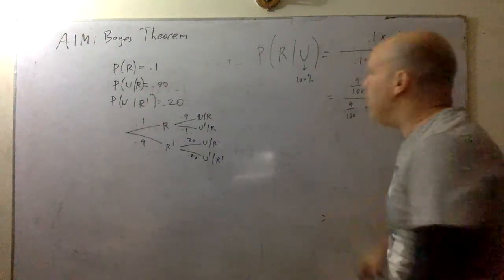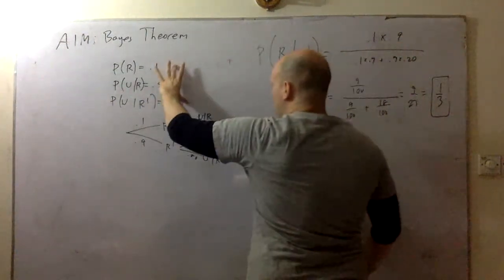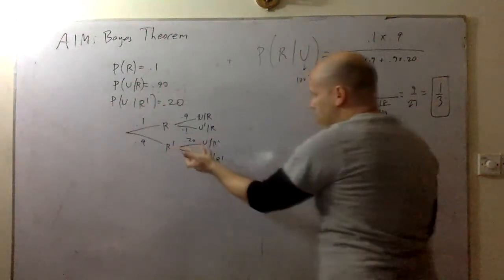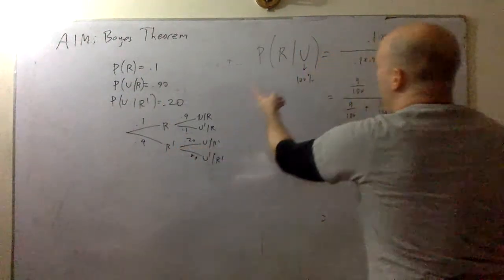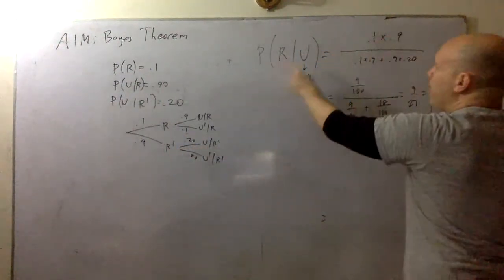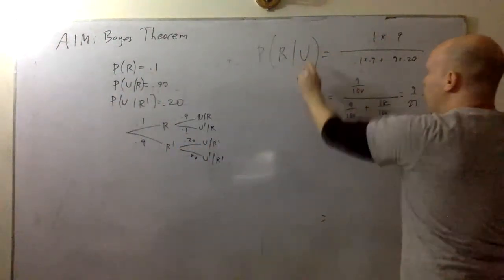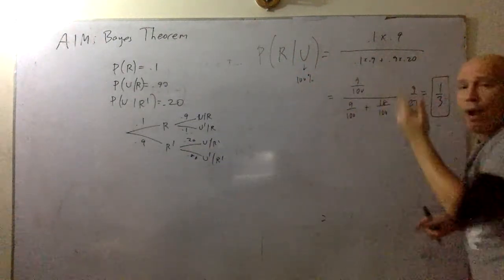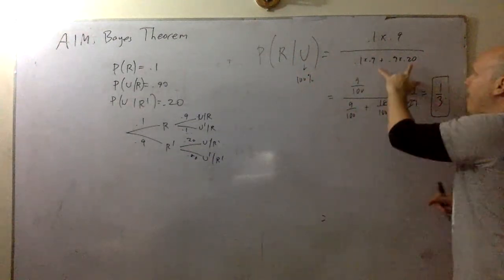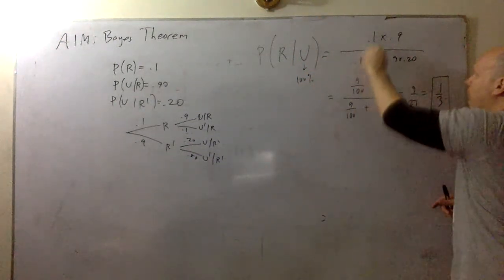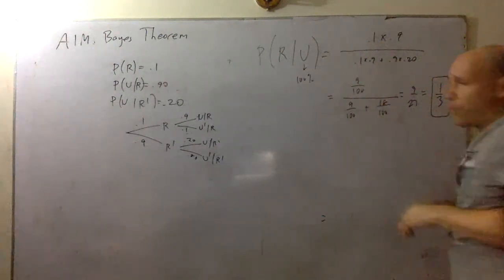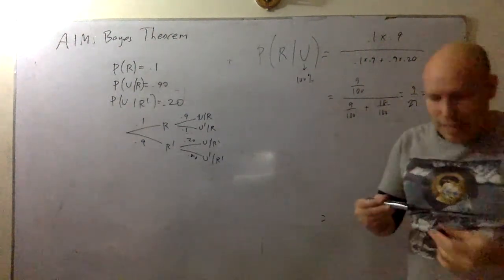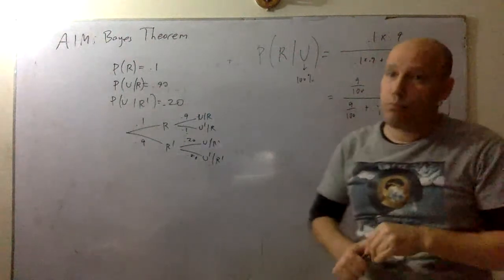Once again: get your immediate information, create your tree. It's going to be flipped around. This is your new 100%, these are the two or three branches, and then pick one of the options for the outcome or event that you hope to happen. That's the idea of Bayes' Theorem.